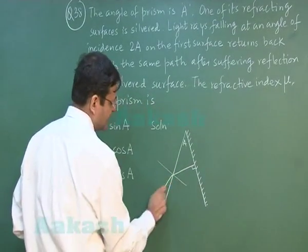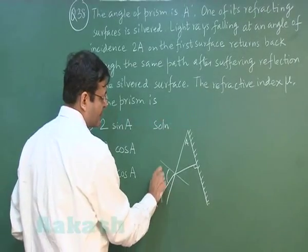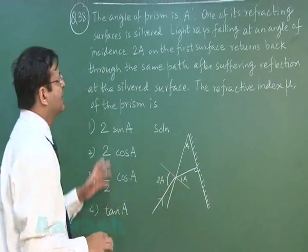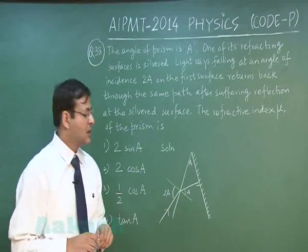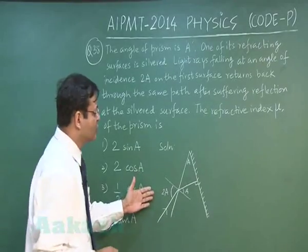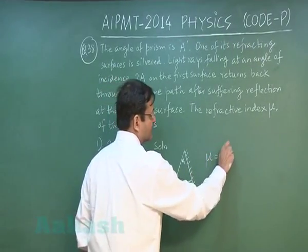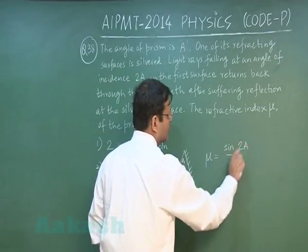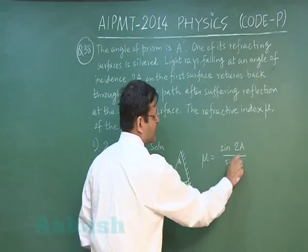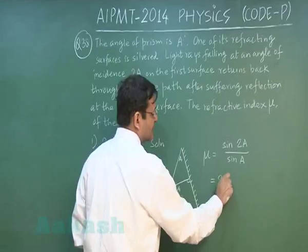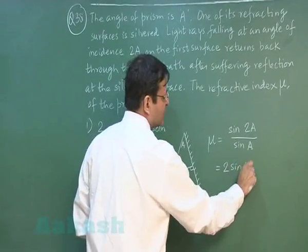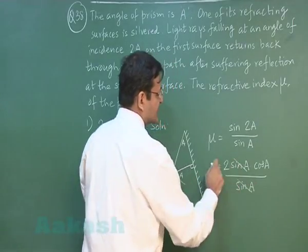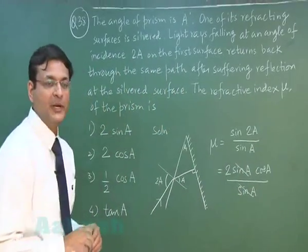The ray comes in making angle 2A. If this angle is A, then the related angle is 90 minus A, and the other angle is A. They are asking for the refractive index μ of the prism. Simply use μ = sin(i)/sin(r), where i = 2A and r = A. Using sin(2A) = 2sin(A)cos(A) divided by sin(A), the sin(A) cancels out and μ = 2cos(A).